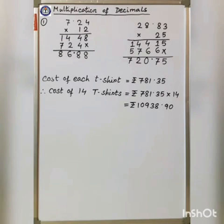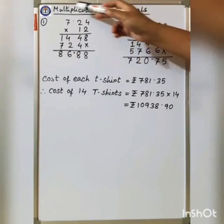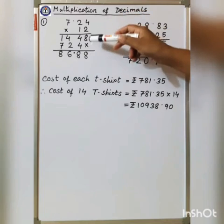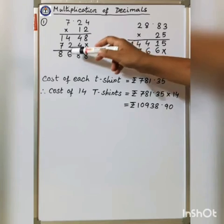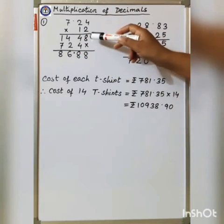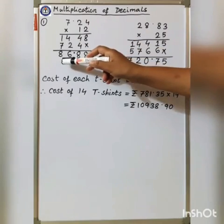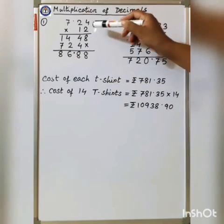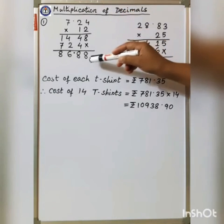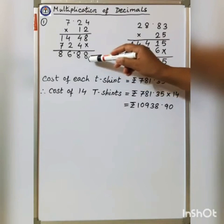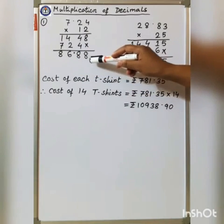Now, multiplication by a counting number. First: 7.24 into 12. Just do the normal multiplication. 4 times 2 is 8, 2 times 2 is 4, 7 times 2 is 14. Then 4 times 1 is 4, 2 times 1 is 2, 7 times 1 is 7. Now add: 8, 4 plus 4 is 8, 4 plus 2 is 6, 7 plus 1 is 8. Then count the decimal places — there are 2 decimal places. So put the decimal point after 2 places in the answer. The answer is 86.88.